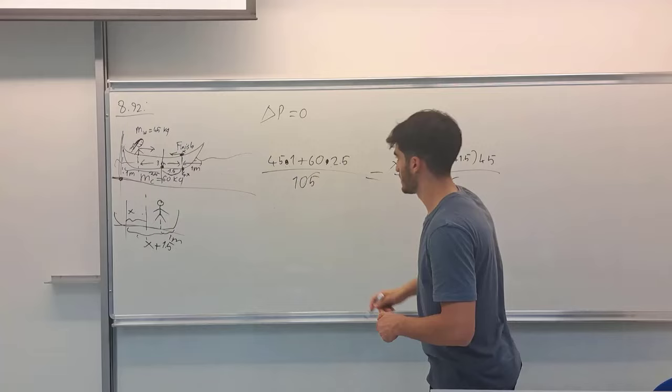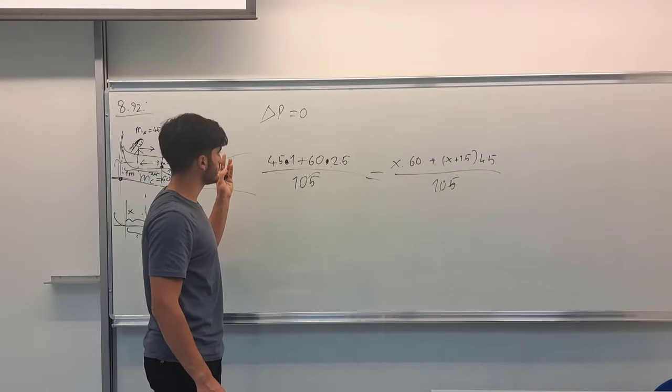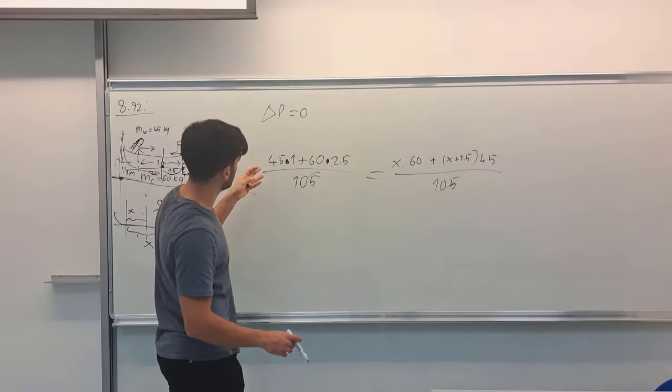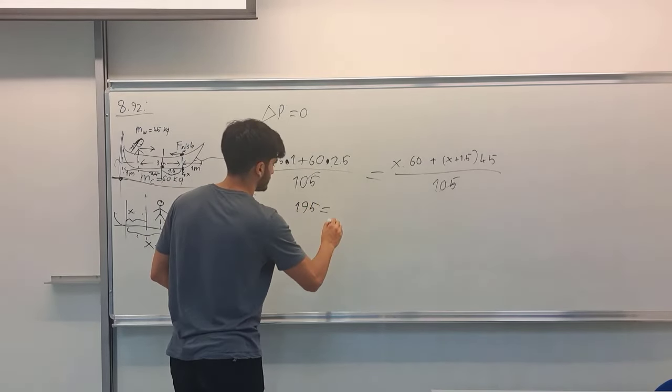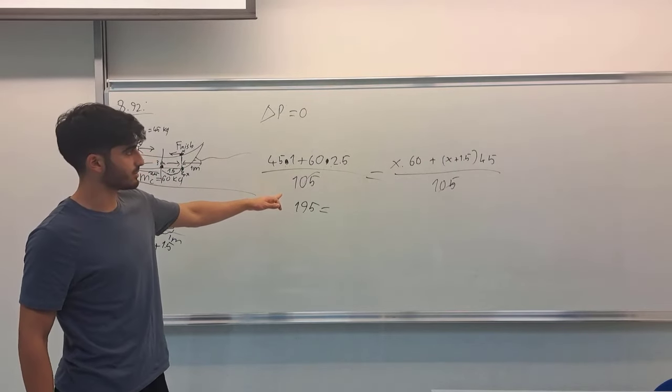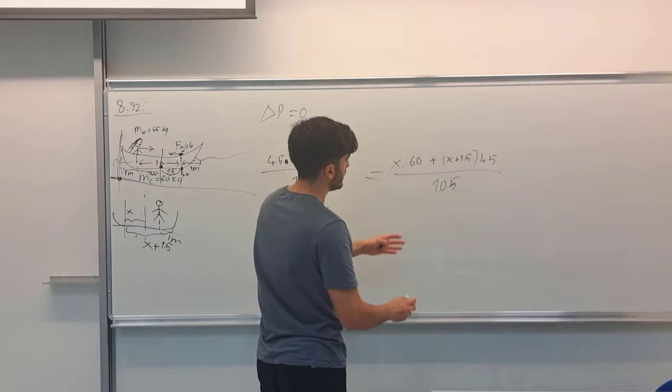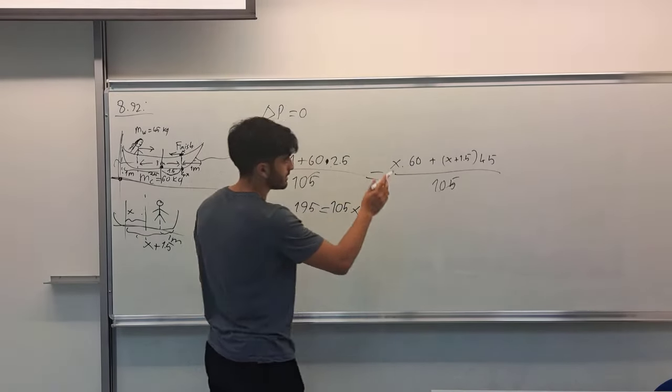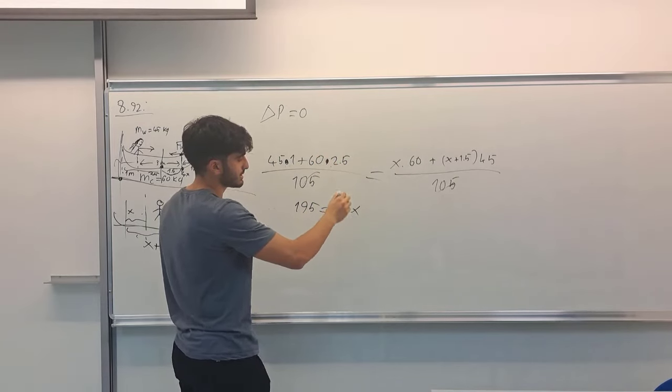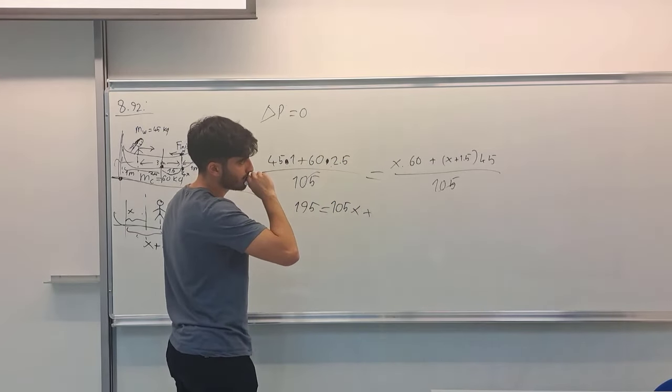So these cancel each other and I obtain here 120, 105, and 50. So 195 I obtain here for center of mass. And also here I can get 105x plus 45 times 1.5, which is 45.